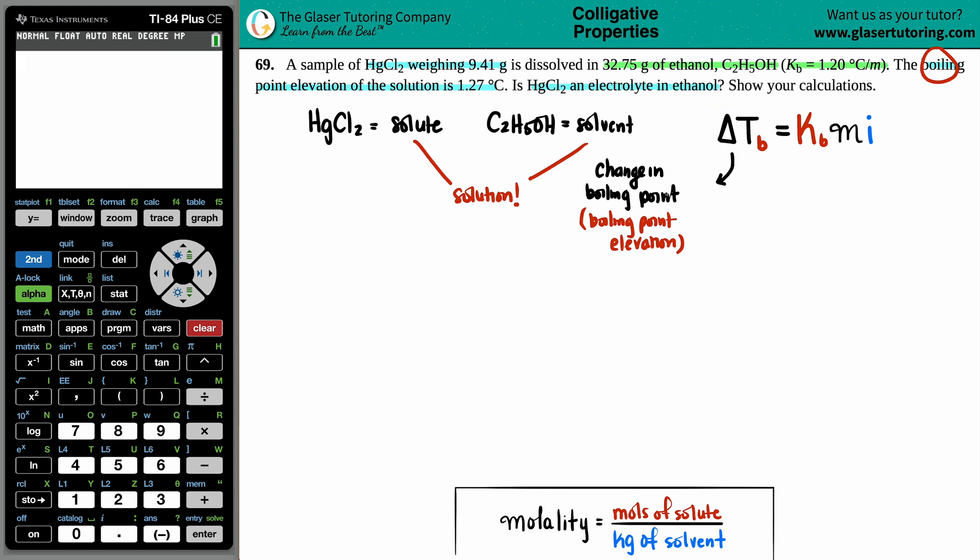So, we already know what that change in the boiling point is. The change is from the initial to the final. But in this case, the elevation is the 1.27. So, I have this value. The Kb value is for the solvent always, and they provided that to us: 1.20 degrees Celsius per molality. Lowercase m is molality. And do I have enough information to solve it?